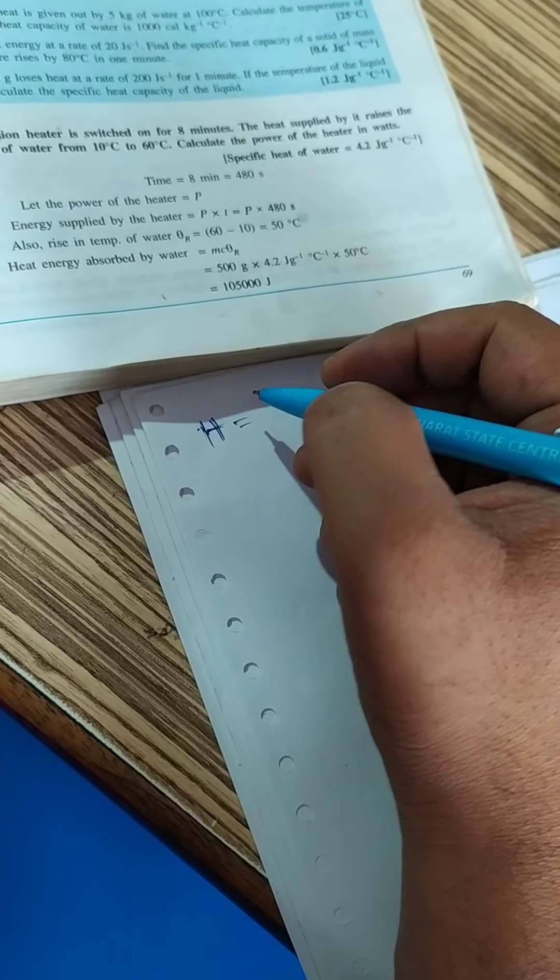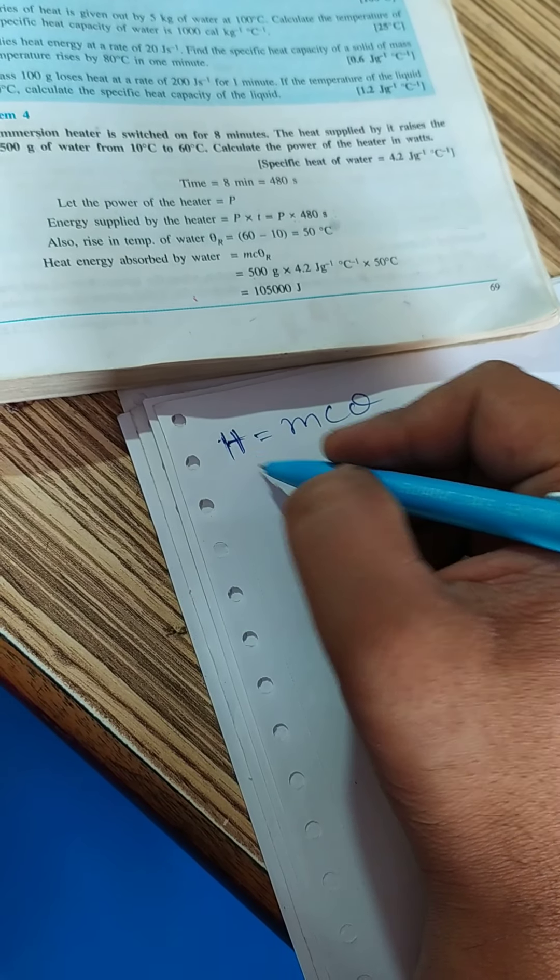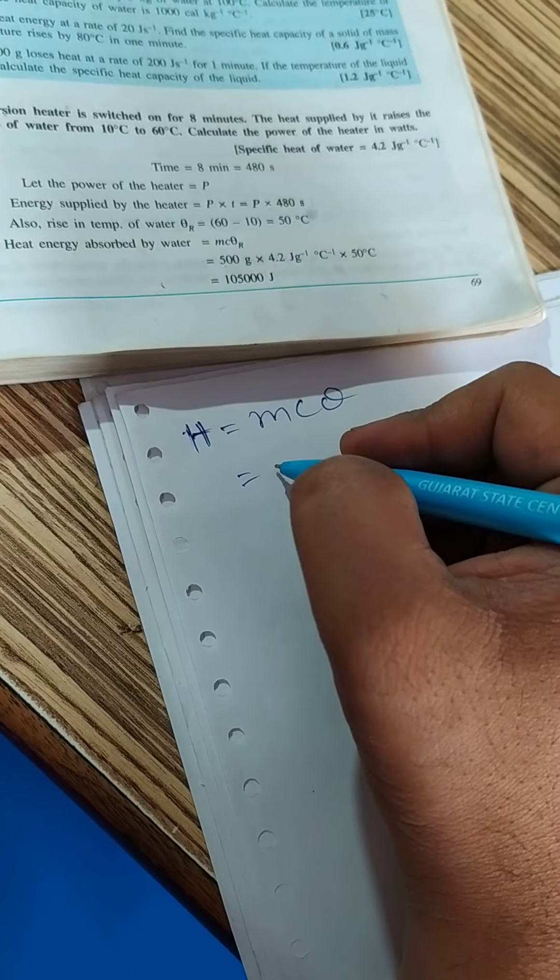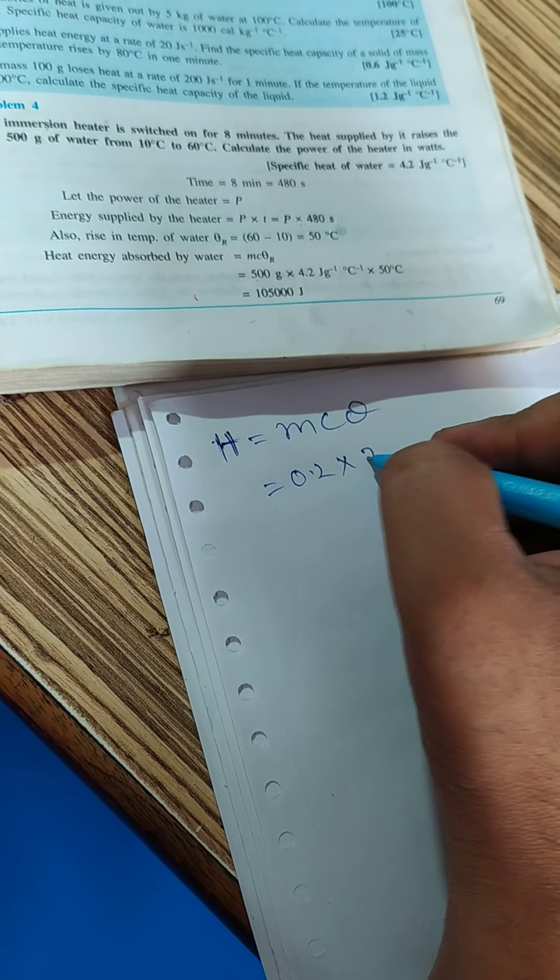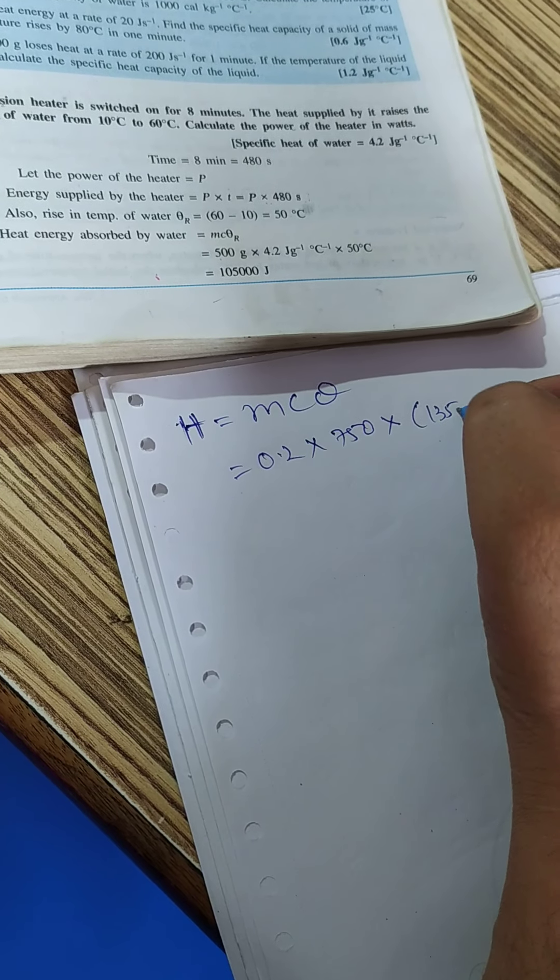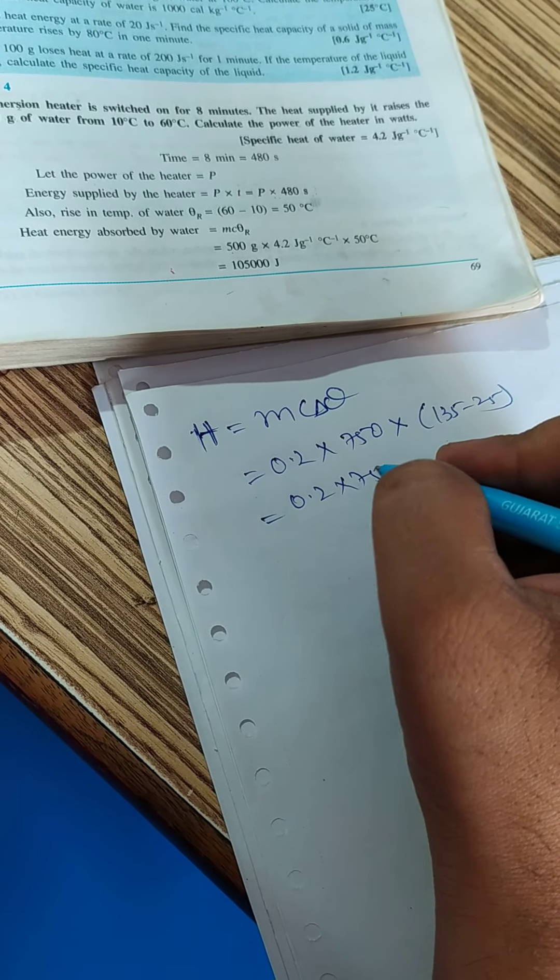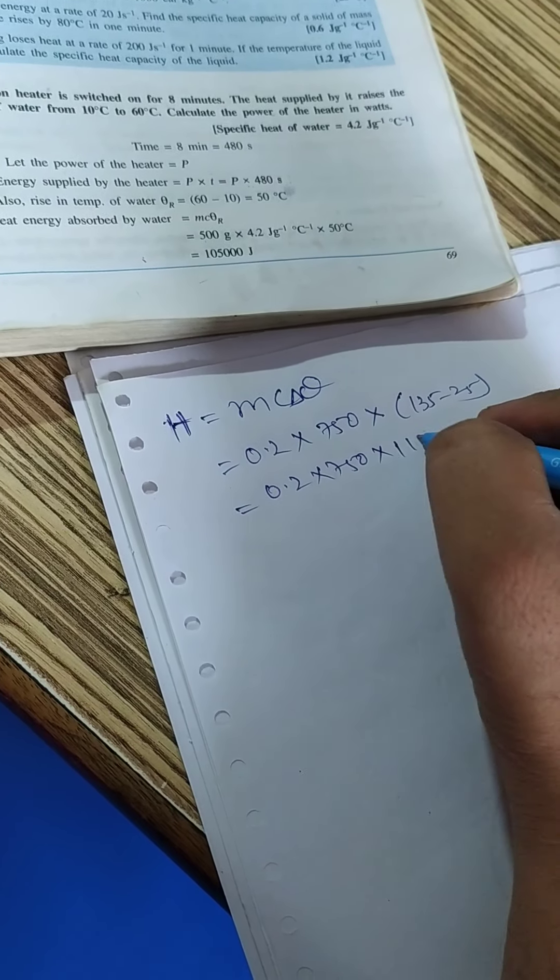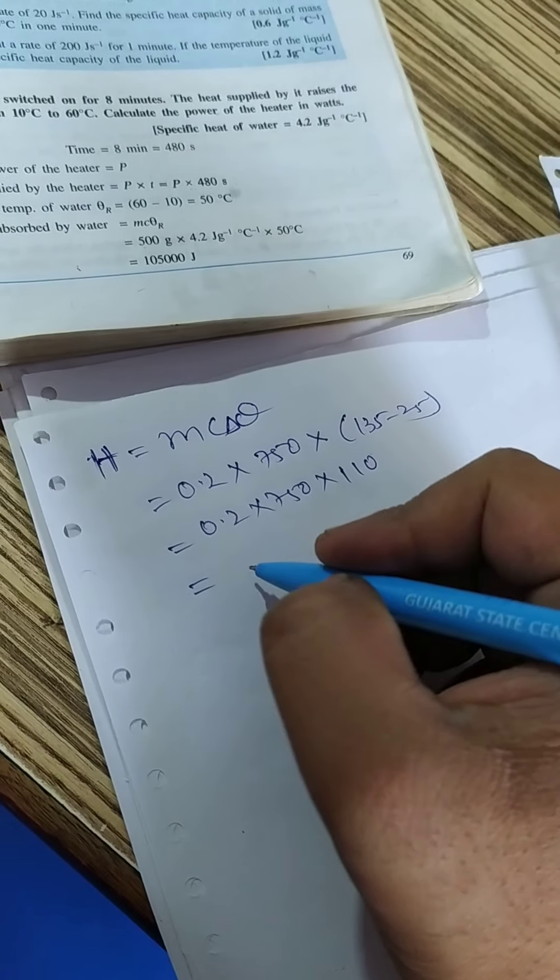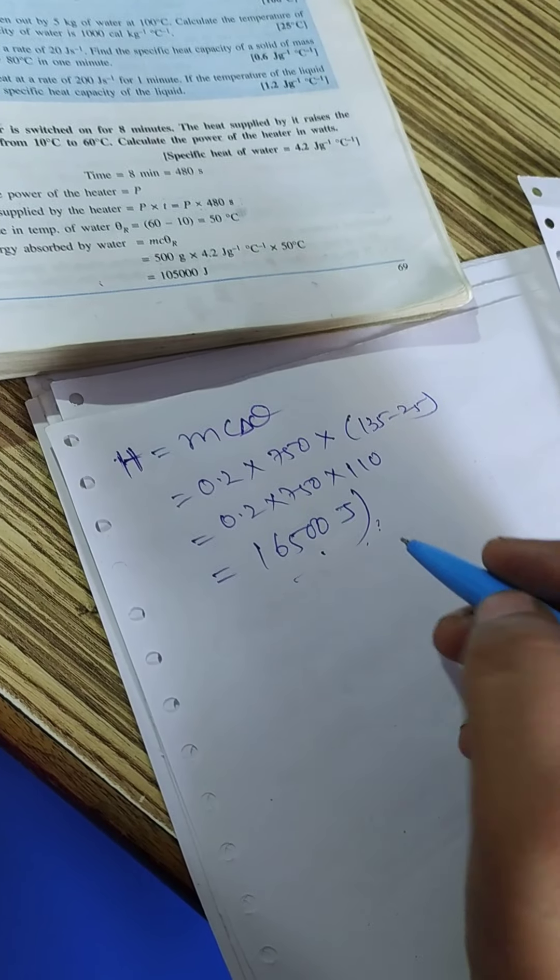So the formula that we use is H equals mc theta. The heat we have to calculate. Mass of the substance is given as 0.2 kg. Specific capacity is 750 and change in temperature is 135 minus 25. So that is 0.2 into 750 into 110 which gives 16,500 joules. This amount of the heat energy is released.